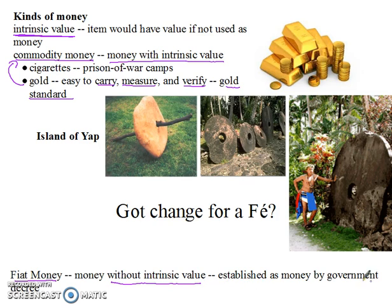Typically, fiat money is established by government decree. The United States government stands behind the U.S. dollar, but the U.S. dollar is fiat money. There's nothing behind it. The only thing that makes it worth anything is that we all agree to use it and the government stands behind it. You can't take your dollars and turn them in for gold. You used to be able to, and then that gold acted as a commodity money in a way. But not anymore — it's fiat money.